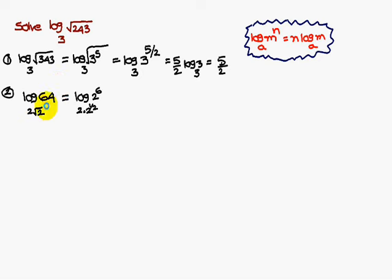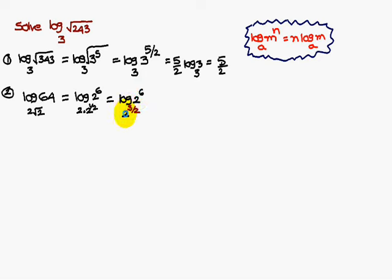Similarly, log 64 base root 2. Write 64 as 2 to the power 6, and root 2 as 2 to the power 1/2. Using the formula log M^N base a^B = N/B times log M base a, this gives 6 divided by 1/2, times log 2 base 2. That is 6 times 2 divided by 1, but since log 2 base 2 equals 1, the answer is 4.